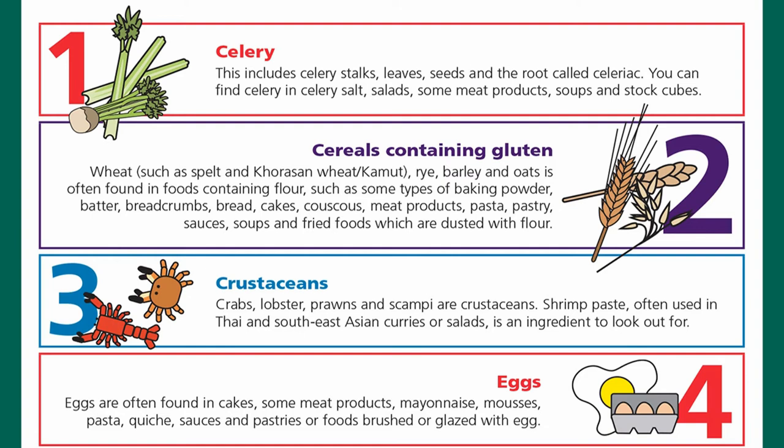Number three is crustaceans such as crabs, lobsters, prawns, and scampi. Shrimp paste, often used in Thai and Southeast Asian curries or salads, is also an ingredient to look out for.